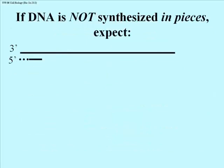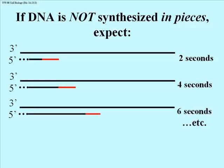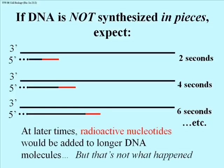Here's what one might expect if both strands were somehow synthesized continuously and not in fragments. After 2 seconds, only short lengths of DNA would have replicated, and the added radioactive nucleotides would be put on the ends of these fragments. After 4 seconds, the replicated DNA would be longer, and the radioactive bits would be added to these longer pieces. After longer and longer times of phage infection, the labeled radioactive nucleotides would be added to longer and longer lengths of replicated DNA. But that's not what Okazaki found in his experiments.